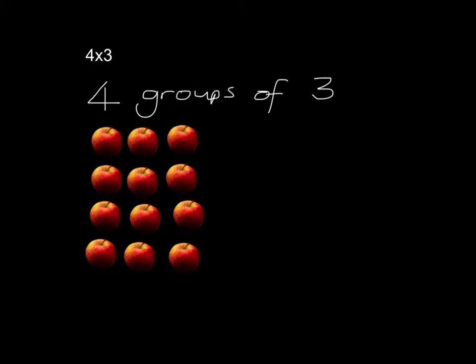4 groups: 1, 2, 3, 4 groups, and in each group we've got 1, 2, 3 apples. How many apples do we then have in total?